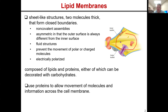They're going to prevent specifically the movement of polar or charged molecules. They are electrically polarized, meaning the charge of all species outside is going to be different from everything inside. The makeup of a lipid bilayer consists of lipids, proteins, and either of which can be decorated with carbohydrates. We use proteins to allow movement of molecules and information across the cell membrane, as there are very few things that can move across a lipid bilayer on their own.